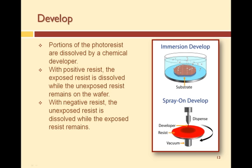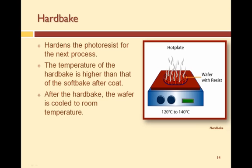To stop the chemical reaction of the developer with the photoresist, the wafers are rinsed with deionized water, then spin-dried. A post-develop hardbake hardens the photoresist for the next process step. The temperature of the hardbake is higher than that of the softbake.